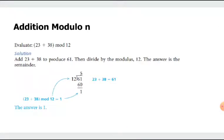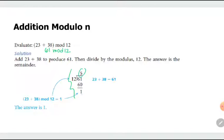Let's start with addition modulo n. We have 23 plus 38 and we are working in modulo 12 arithmetic. First, add 23 and 38 to get 61, then divide 61 by 12. The quotient is 5, but that's not your answer — your answer is the remainder. So 61 modulo 12 is equivalent to 1.